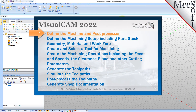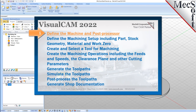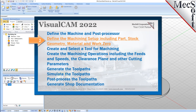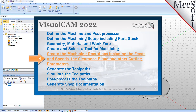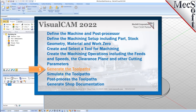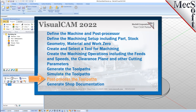We will perform the following basic steps in machining this model. First, we will define the machine and the post processor to use. Then we'll define the machine setup, including the stock geometry, material, and work zero. Then we'll create and select a tool to use for machining. We'll create the machining operations, including the feeds, speeds, clearance planes, and other cutting parameters. Then we'll generate the toolpaths, simulate the toolpaths, post-process the toolpaths, and then generate shop documentation.